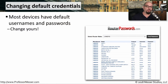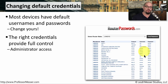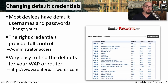When you first plug in a router, a switch, a firewall, or any of these other network devices, there's usually a default username and password that you can use to gain access to that system. These default credentials are well-known. For example, you can go to a website like routerpasswords.com that lists all of these different models of devices and provides the username and password for all of these different systems. These default usernames and passwords are usually providing full control or administrator access, so if you don't change these defaults, someone else will come along and try them, potentially giving them administrator access to your new devices.